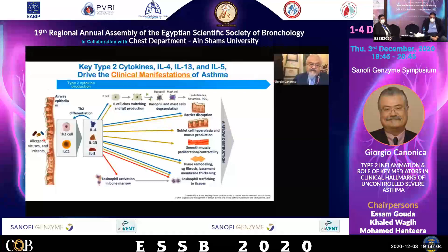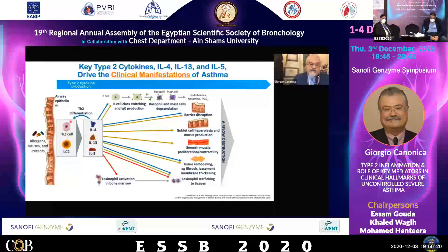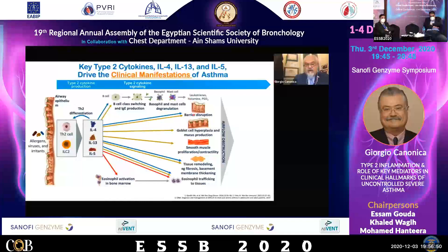To make it more complex: the type 2 cytokine production starts in response to outdoor stimuli via ILC2 and TH2 cells. The lymphokines produced are IL-4, IL-13, and IL-5. These are then working on signaling — on eosinophils, on tissue remodeling including smooth muscle and goblet cell hyperplasia — as well as on barrier disruption.